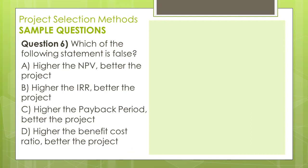Question number 6: Which of the following statements is false? A. Higher the NPV, better the project. B. Higher the IRR, better the project. C. Higher the payback period, better the project. D. Higher the benefit cost ratio, better the project. Let's think about the definitions and formulas first, then we will comment on the statements.